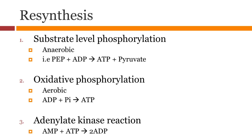The third method is through the adenylate kinase reaction, which catalyzes this particular reaction: two ADP molecules yield one AMP molecule and one ATP molecule. The ADP is then used in the processes above to make ATP.